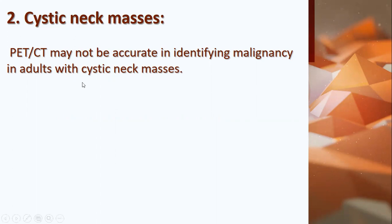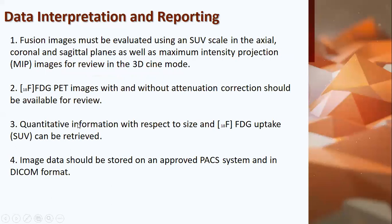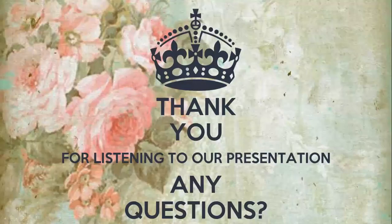A cystic neck mass may not be accurately identified as malignant on PET-CT in adults. Regarding data interpretation and reporting: fusion images must be evaluated using the SUV scale in axial, coronal, and sagittal planes as well as maximum intensity projection. FDG images with and without attenuation correction should be available for review. Quantitative information with respect to size and FDG uptake can be retrieved, and image data should be stored on approved PACS systems in DICOM format.